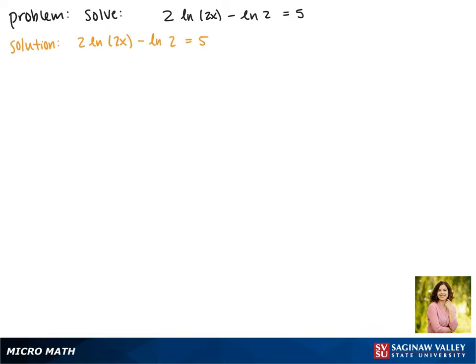First we want to simplify and combine all of our natural logs. According to our natural log rules, this 2 in front of the natural log can be rewritten as an exponent. So this becomes the natural log of 2x all squared minus the natural log of 2 equals 5.